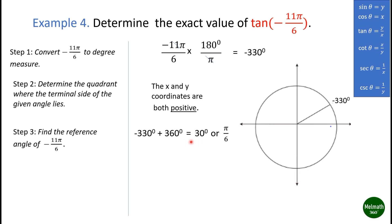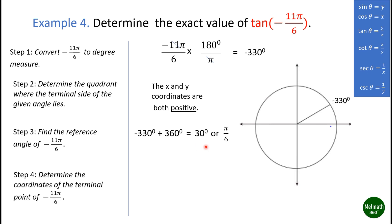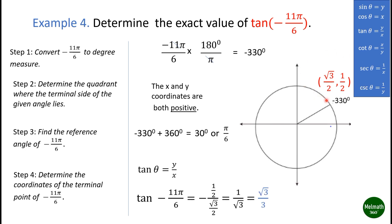Find the reference angle of -11π/6: -330° + 360° = 30°, or pi over six. Determine the coordinates of the terminal point of -11π/6. Tangent(-11π/6) = y/x = (1/2)/(√3/2), and the final answer is √3/3.